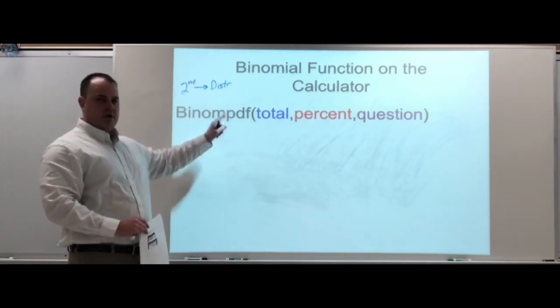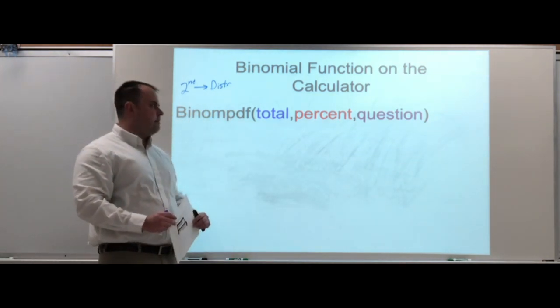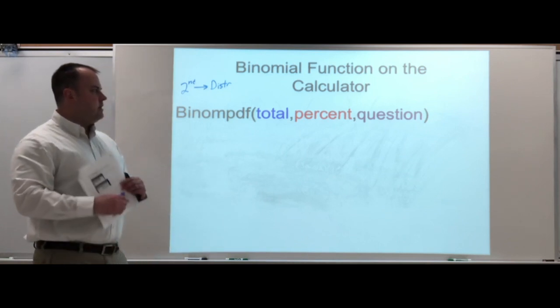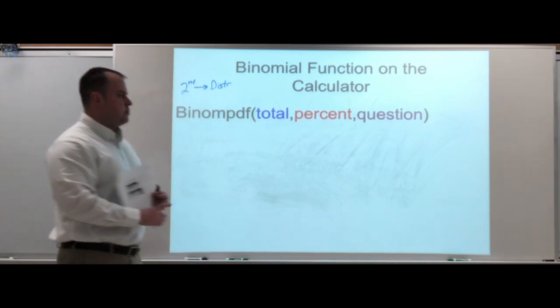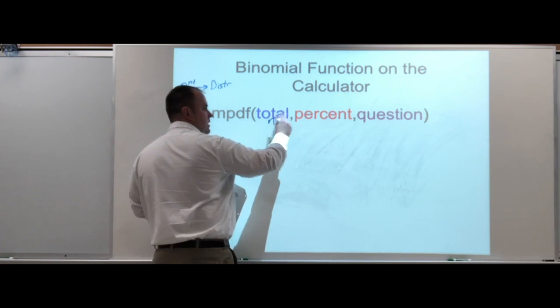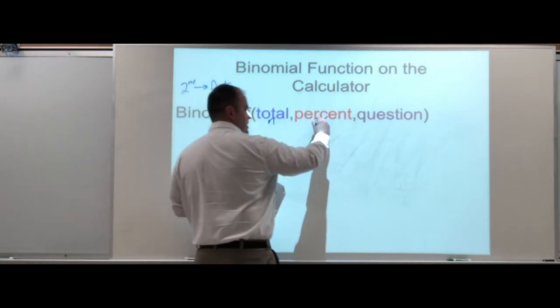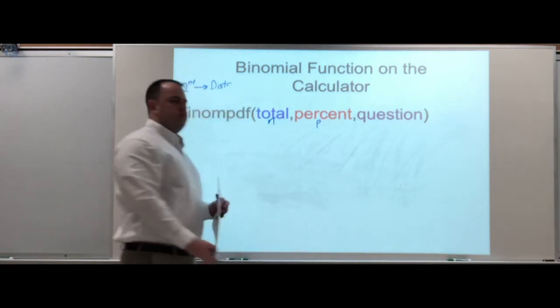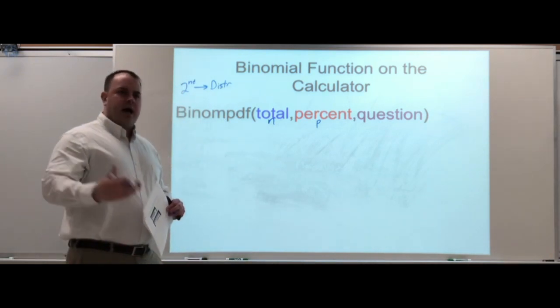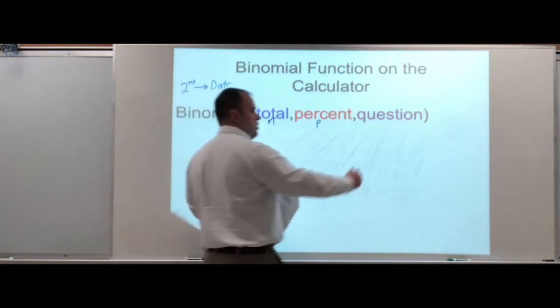Right now I just want to make sure you are using the pdf because we're going to be looking at one value at a time. The values you need to plug in are your total, which would have been your n, your percent of the success which is your p, and the value in question, how many is it going to show up, that would be your r.